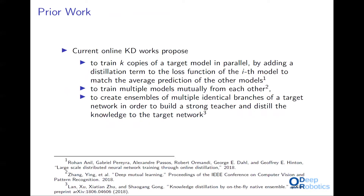Online distillation includes works proposing to train multiple copies of a target model in parallel, by adding a distillation term to the loss function of the i-th model to match the average prediction of other models, to train multiple models mutually from each other, or to create ensembles of multiple identical branches of a target network in order to build a strong teacher and distill their knowledge to the target network.